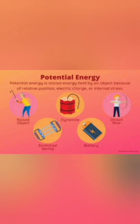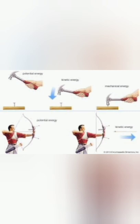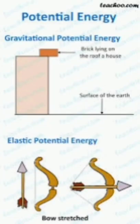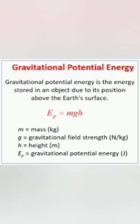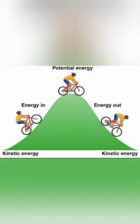Potential energy is the energy an object has thanks to its position in a system, equivalent to the capacity to do work. Its most familiar form is gravitational potential energy, calculated by the formula: potential energy is equal to mass times gravitational acceleration times height, where height is the object's height.